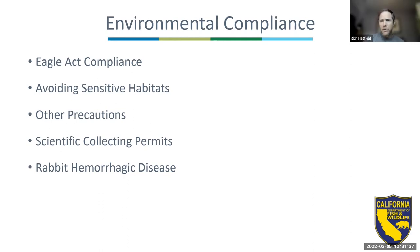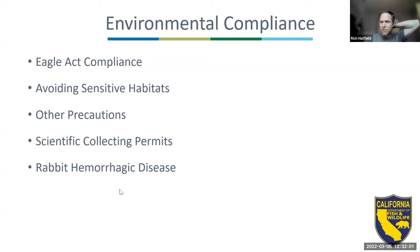Fish and Wildlife Service has acknowledged that survey effort is the number one important thing for finding Franklin's bumblebee. They don't want this to be a barrier and are working quickly to try to expedite this through the process, but there are certain regulatory hoops necessary with federally endangered species. So, hopefully completed by May 15th, but no guarantees.